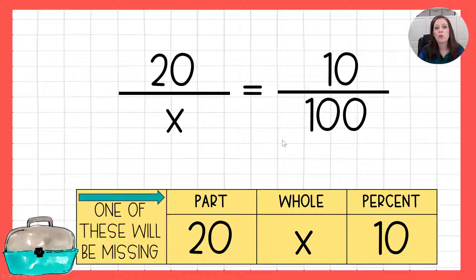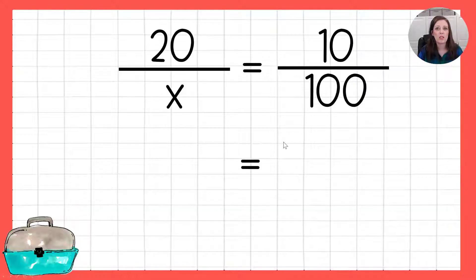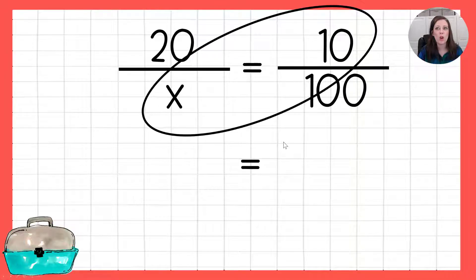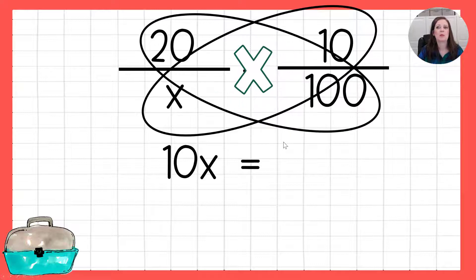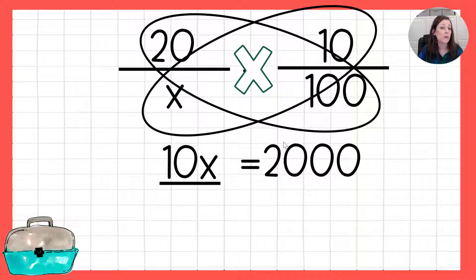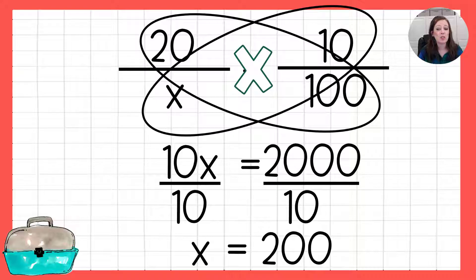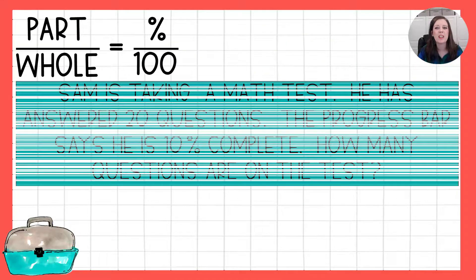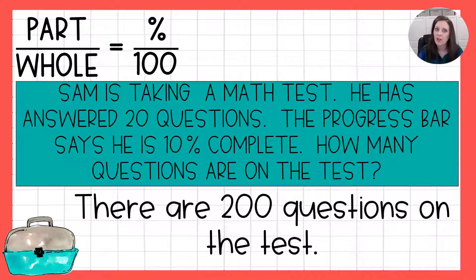Now we are ready to solve this proportion. So we're going to do some cross multiplying. 10 times x is 10x. 20 times 100 is 2000. We've got a one-step equation here. So we're going to do the inverse of multiplying and divide both sides by 10. x is 200. That means on this test there were 200 questions. Aren't you glad I didn't give you that test?